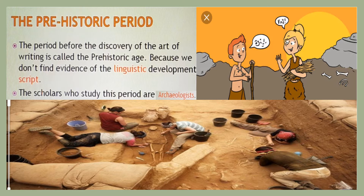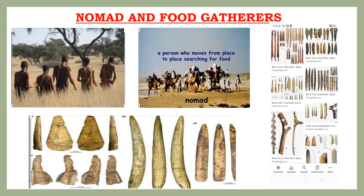In this age, man was a nomad — someone who lives by traveling from place to place. Man was indulged in hunting and food gathering. Archaeologists have discovered tools created and used by these people. Prehistoric people used tools made of stone, wood, and bones. Among these, only stone tools have survived today and are important sources for studying this period.